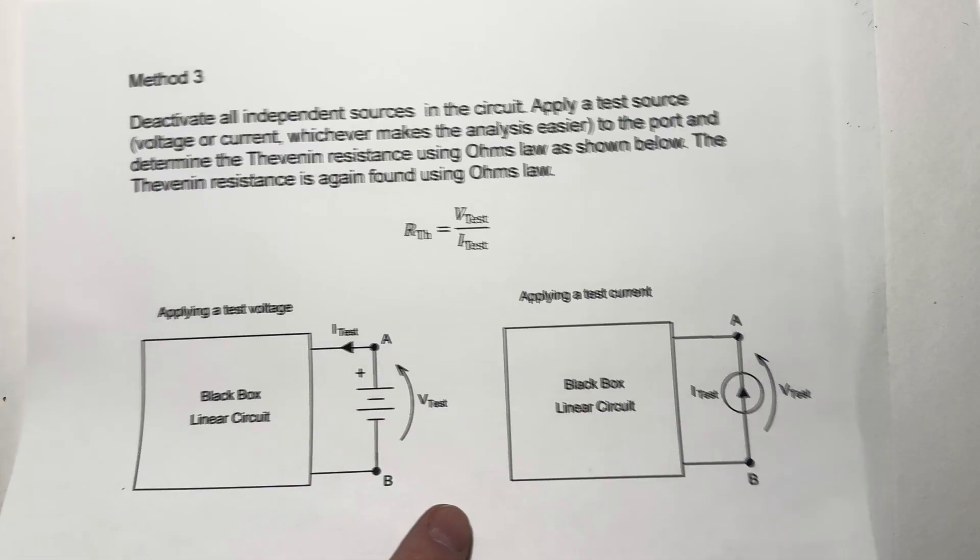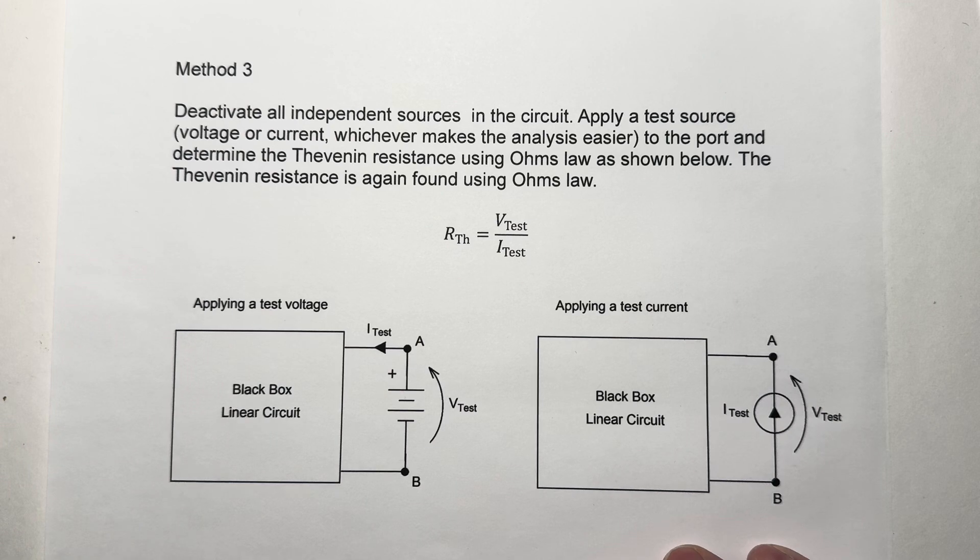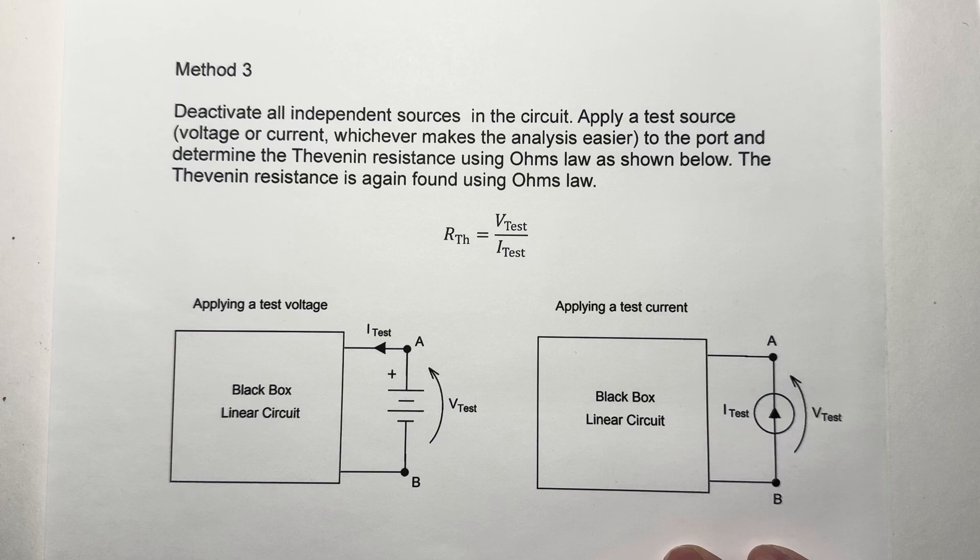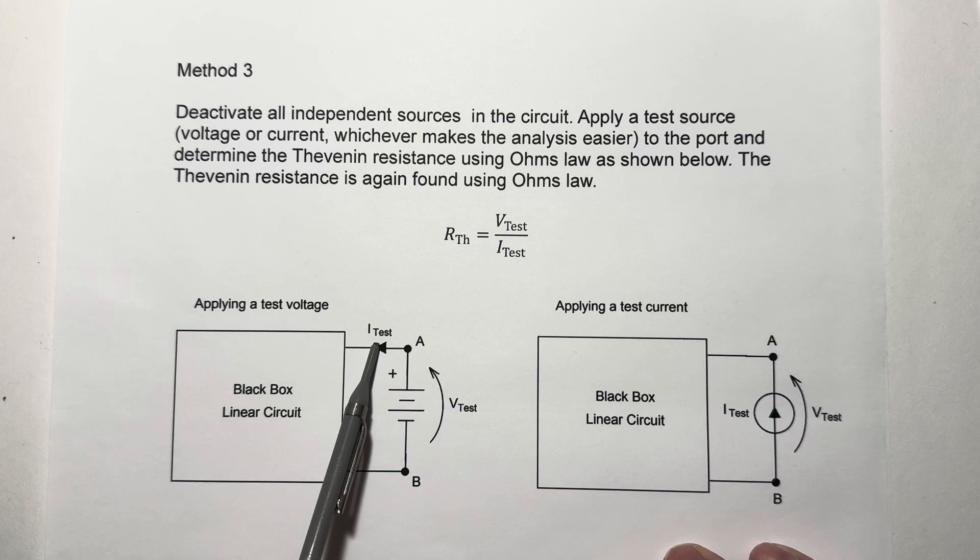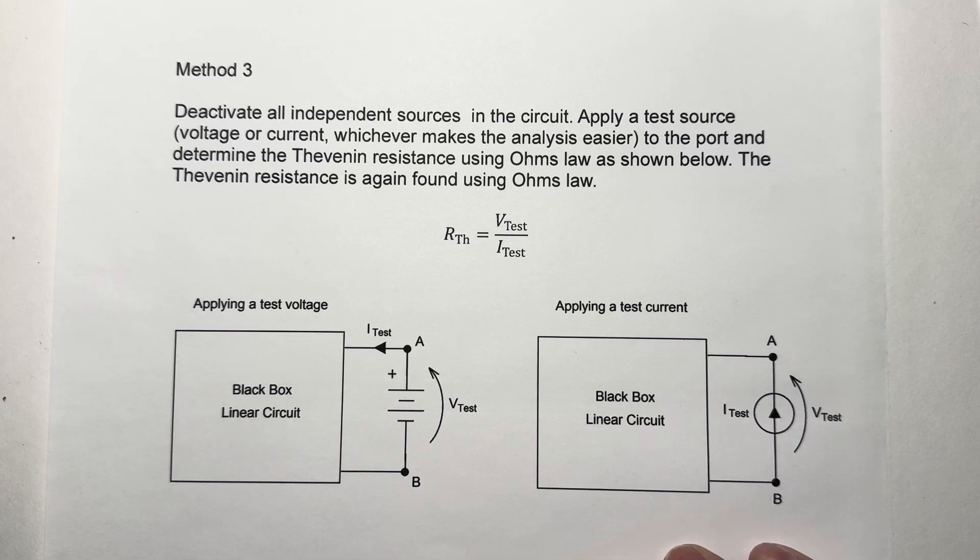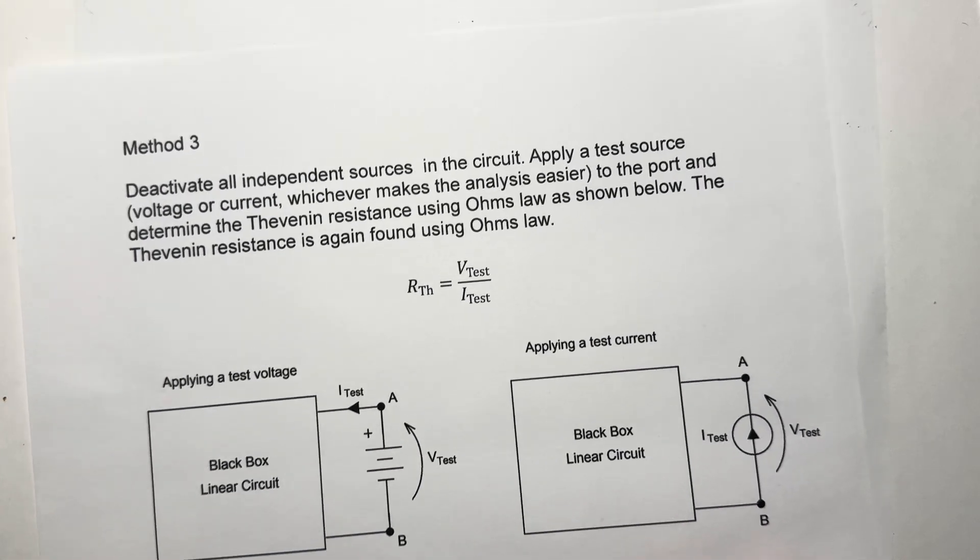Method number three, we can deactivate all of the independent sources in our circuit and apply a test source. The test source could be a voltage or a current. And then we apply Ohm's Law and calculate RTH by dividing the test voltage by the resulting test current or the test current by the resulting test voltage. This technique is used often when we have mixtures of dependent and independent sources in one circuit. Again, it's a little bit more advanced. We're not going to do that here today. We'll save that for some future video.